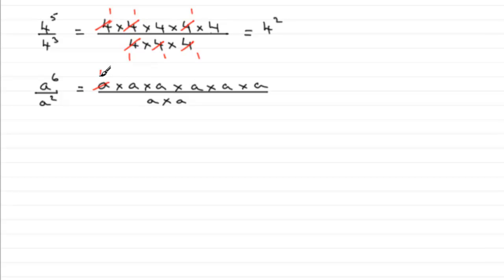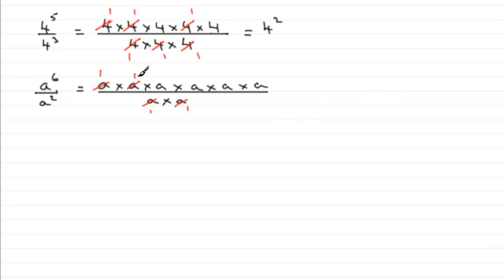I can start to cancel down: a into a goes once, a into a goes once again. Remember, a represents some number — as long as it's the same number, we'll always get this cancelling. I can still cancel by another a: a into a goes once, and a into a goes once. So what am I left with? 1 times 1 is 1, but then a times a times a times a — in other words a to the power 4 on the top. Underneath I've got 1 times 1, which is 1. So a to the 4 divided by 1 is simply a to the 4.